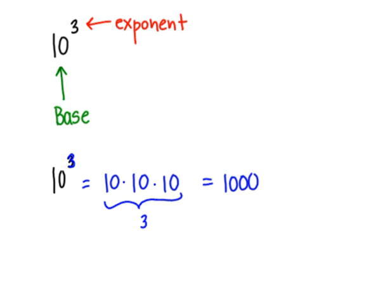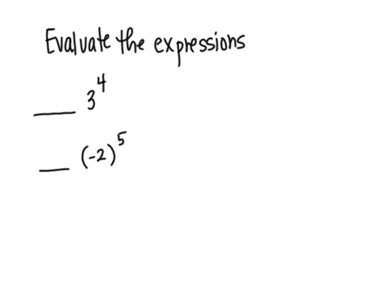So let's solve some exponential expressions. My first one says evaluate the expressions, and the first problem is 3 to the 4. So that means I'm going to use 3 one times, two times, three times, four times. So 3 to the 4 would actually equal 3 times 3 times 3 times 3.